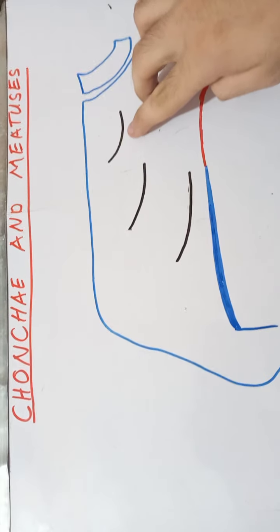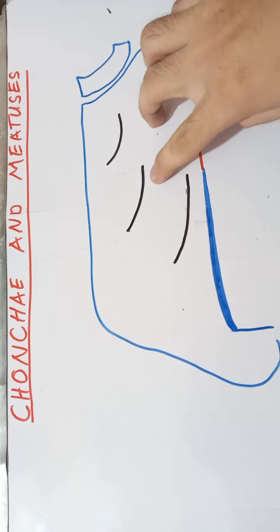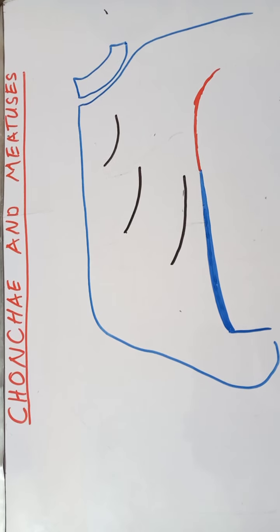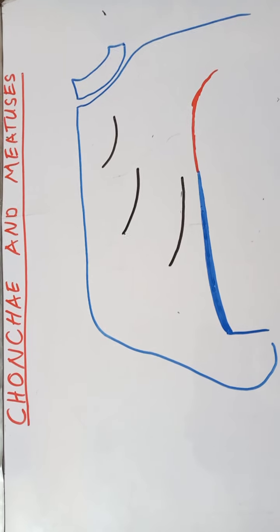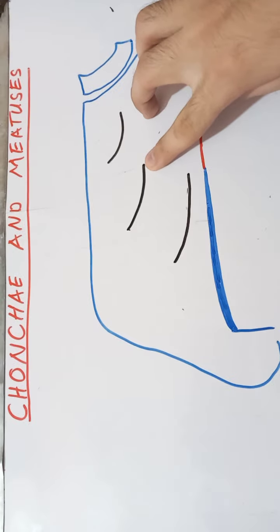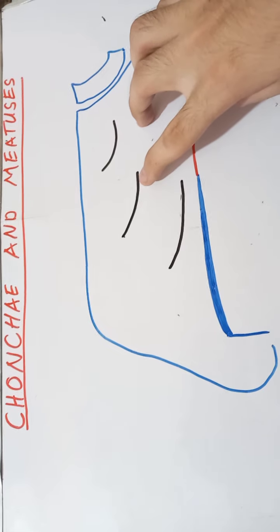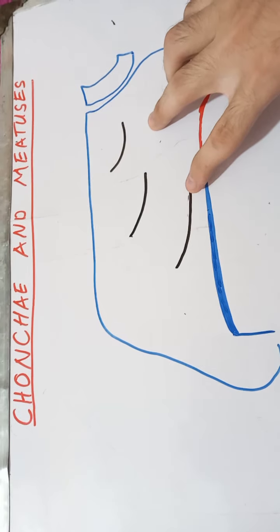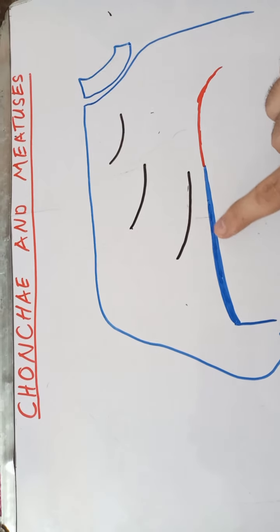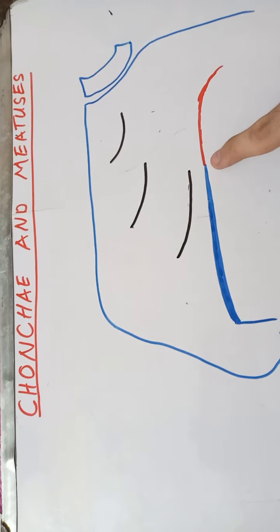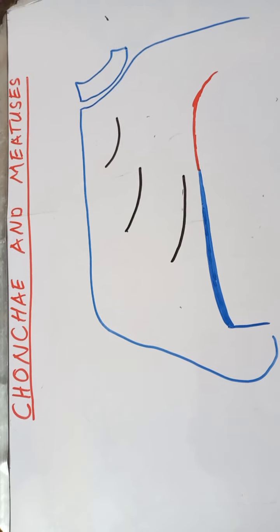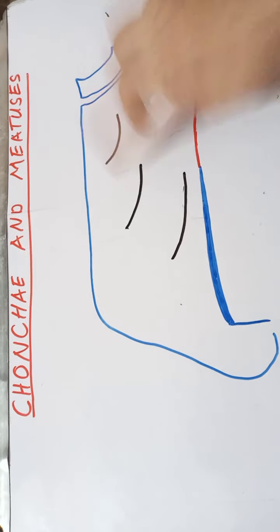There are three conchae in the nose: the superior concha, the middle concha, and the inferior concha. The superior and middle conchae are the medial processes of the ethmoid bone, and the inferior concha is a separate bone. The space between the superior and middle concha is the superior meatus, between the middle and inferior concha is the middle meatus, and between the inferior concha and the hard palate is the inferior meatus.